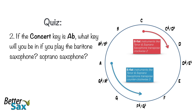If the concert key is A flat, what key will you be in if you play the baritone saxophone? And the soprano saxophone? Baritone is F, soprano is going to be B flat.